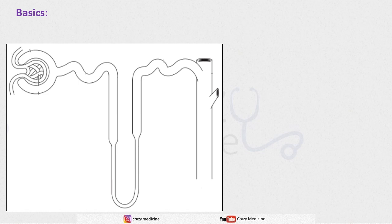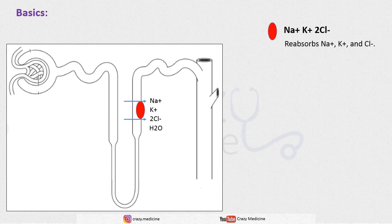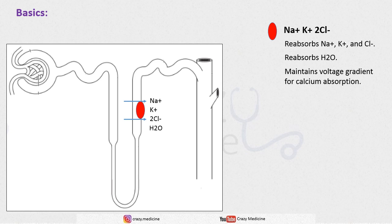The important channels we need to study are: first, the sodium-potassium-2-chloride channel, which is present in the thick ascending loop of Henle. It reabsorbs sodium, potassium, and chloride, and along with this, water is also reabsorbed. This pump is responsible for maintaining the voltage gradient in the nephron, which is necessary for absorption of calcium.